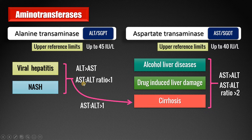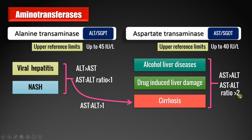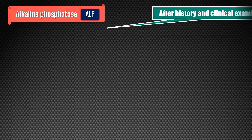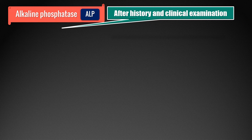Initially, the ratio of AST to ALT in viral hepatitis and NASH is less than 1. But in advanced cases or when leading to cirrhosis, the ratio becomes more than 1, and when cirrhosis is reached, the ratio should be more than 2. This is the point to remember. Coming to alkaline phosphatase — again, this enzyme is expressed in many different tissues or organs, so we have to correlate with other liver function tests as well as proper history and clinical examination.